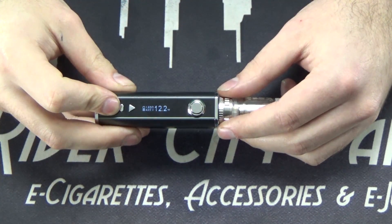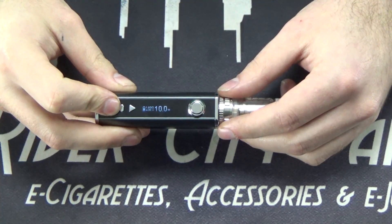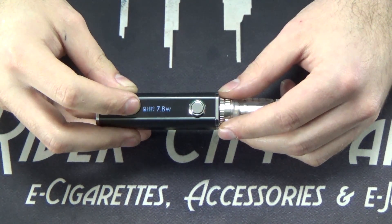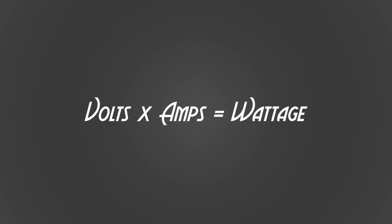Now, as well as volts, resistance, and amps, there is one more unit that can be derived from Ohm's Law — that would be wattage. Wattage is basically the overall power created from a circuit. We will talk a little bit more about wattage, or watts, later on in the video.